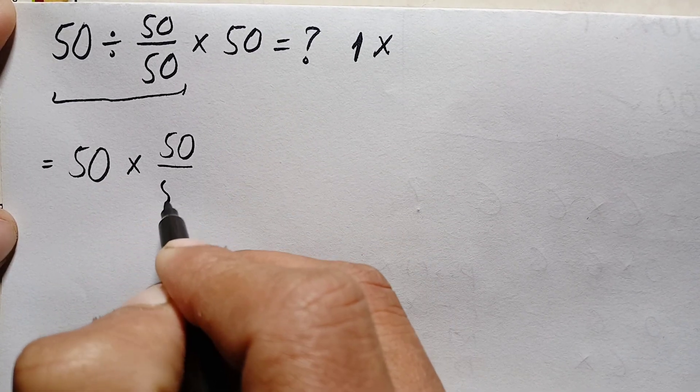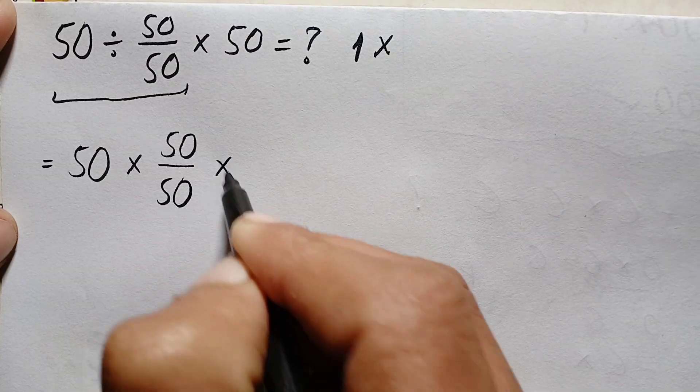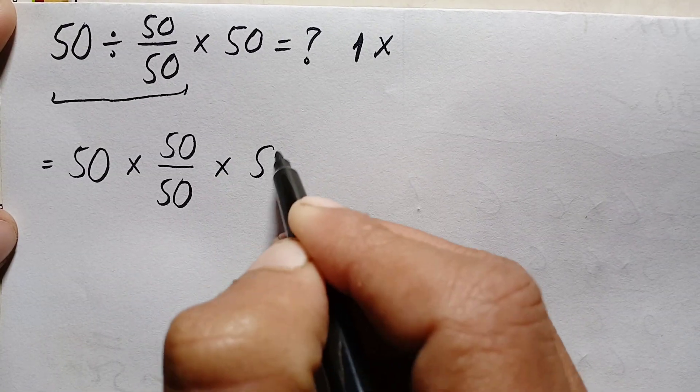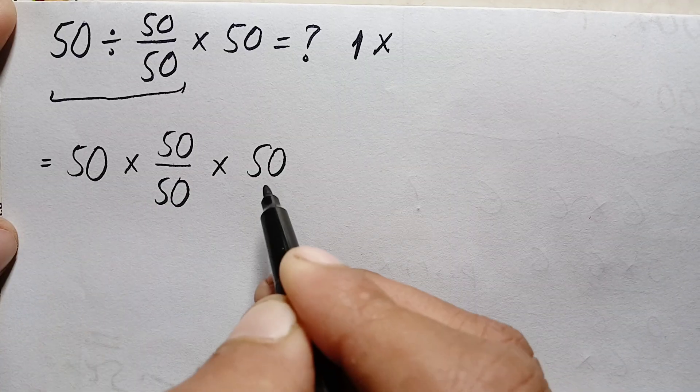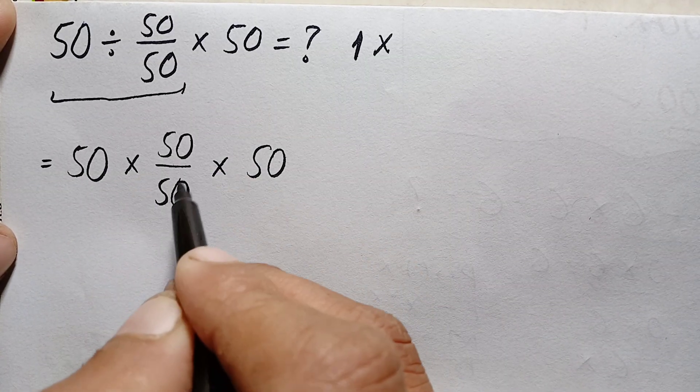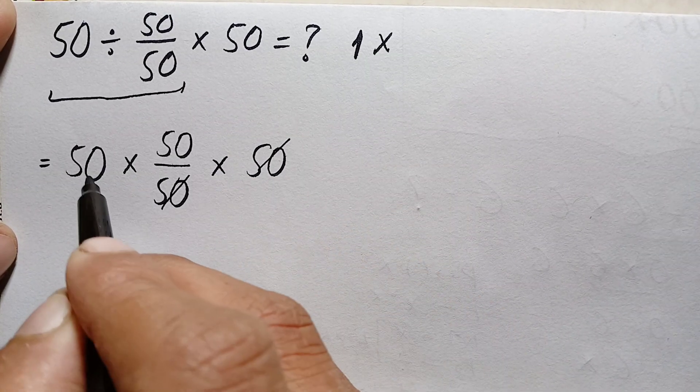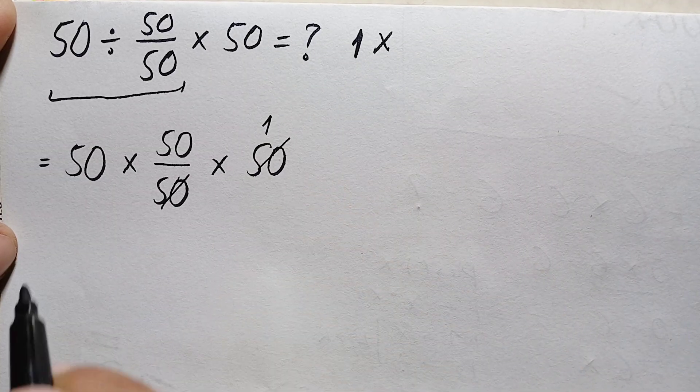Then we can cancel this 50 either with this 50 or this 50. So let's cancel out this 50 with this 50. So this will become 50 times 50 times 1.